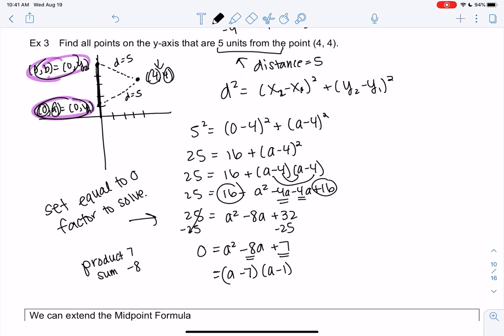And it looks like it found both solutions for us, right? Because both equations would look the same. So it looks like a is 7, or sorry, a is 1, right? And b would be 7, the way I drew the image. So those are my two points: (0,7) and (0,1) are 5 units from (4,4).